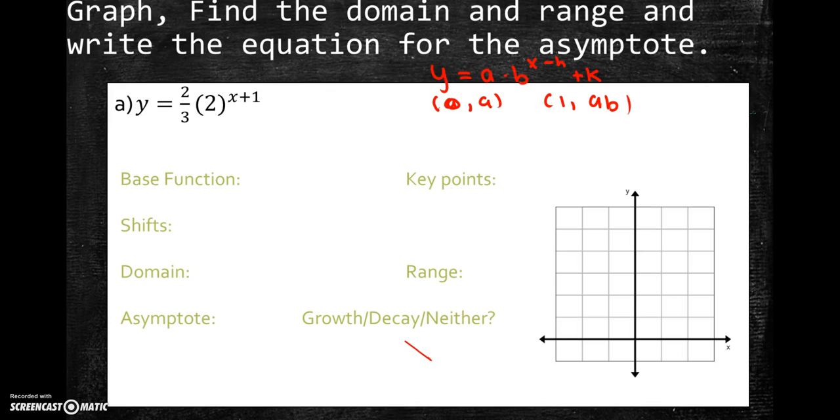Our first example graph, find the domain and range and write the equation for the asymptote. Here's our equation. Notice that we have this extra plus 1 there. What that is, is we have a horizontal shift. It's always going to be x minus h, so it's minus the horizontal shift. So in this scenario, we're going to have a shift left 1. And then if there's a big number outside, which we don't have there, then it would be an up-down shift. So if it was like a big plus 5, then it would be a shift up 5. But the horizontal shift is always in the opposite direction. So we have a shift left 1. Our base function is always the function without the shifts. So in this scenario, it's y equals 2 thirds times 2 to the x.